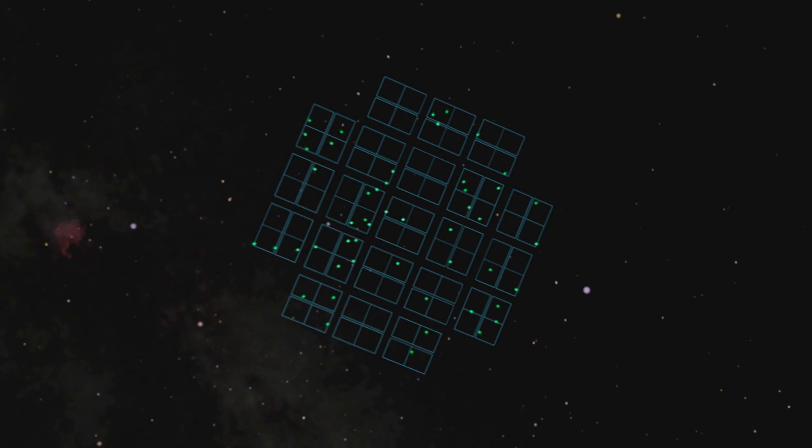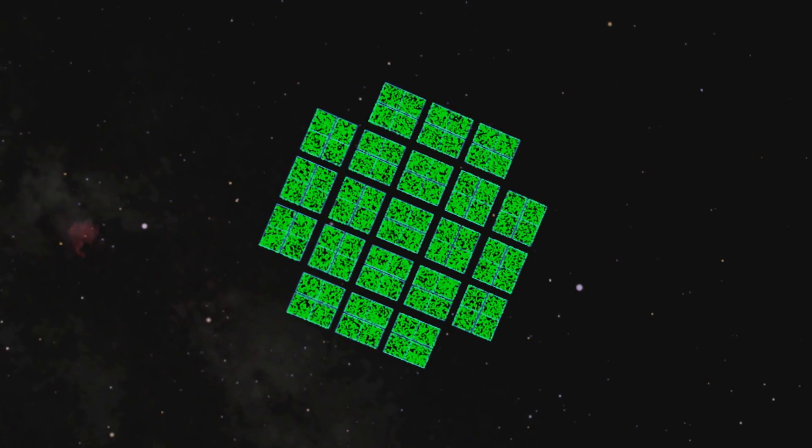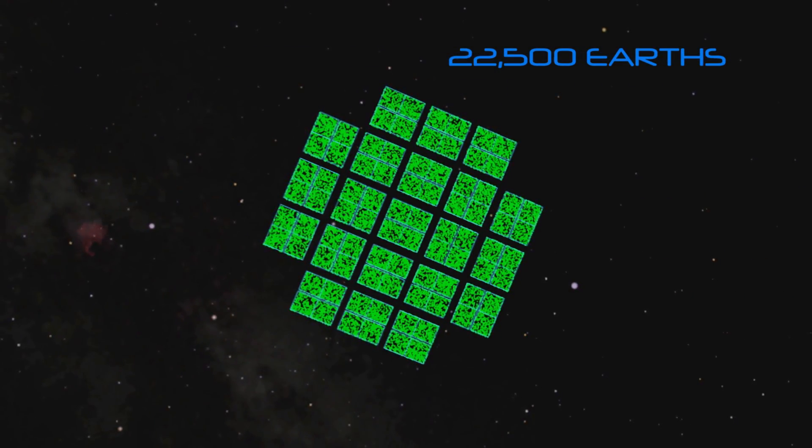After counting for all the missing worlds, Kepler's field of view becomes dense with planets that may be like Earth.